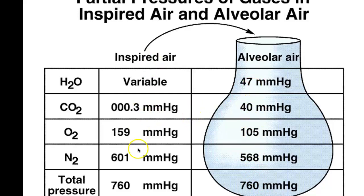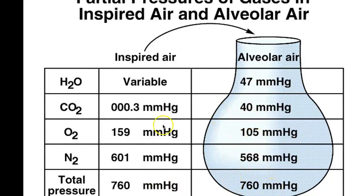In inspired air it's actually a lot more nitrogen, more oxygen, a very small amount of carbon dioxide, and the amount of water is variable. Whereas in the alveolar air, water is pretty high, CO2 is higher because that's what you are unloading from your tissues, oxygen is lower, and nitrogen is a little bit lower as well. But they're equivalent in terms of total pressure — just the partial pressures of gases differ.